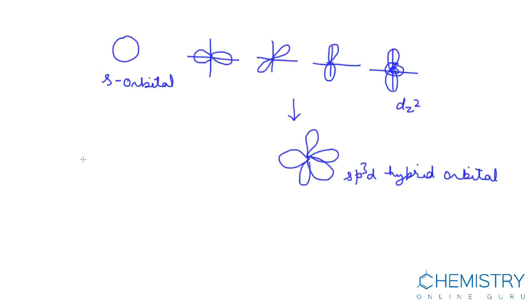Now we will discuss hybridization in PCl5. Phosphorus, atomic number of P is 15. Configuration is 1s2, 2s2, 2p6, 3s2, 3p3.